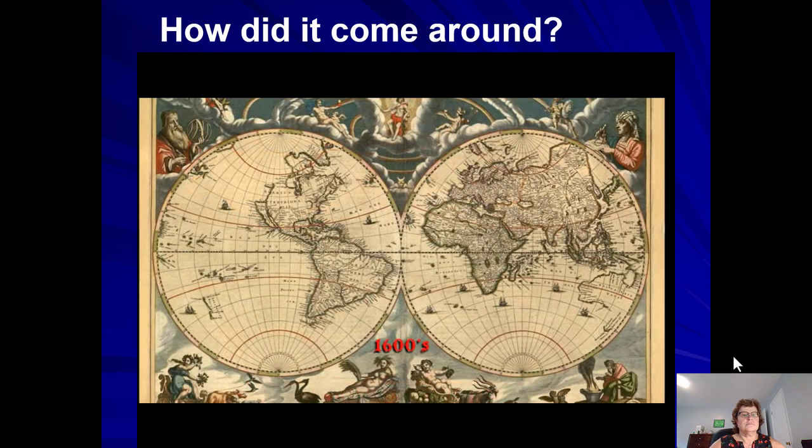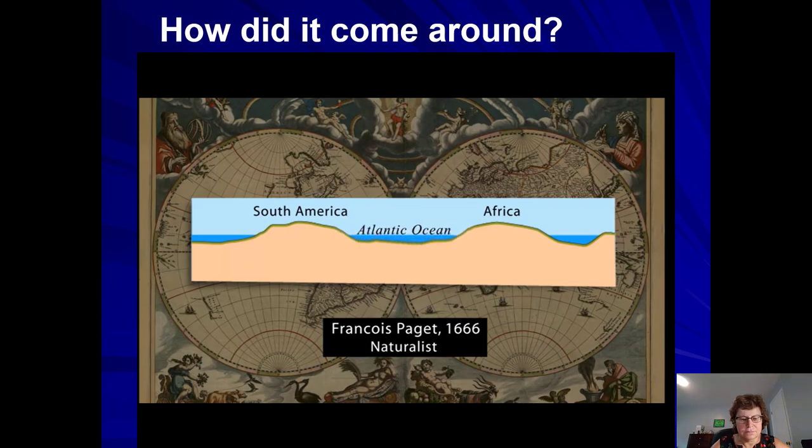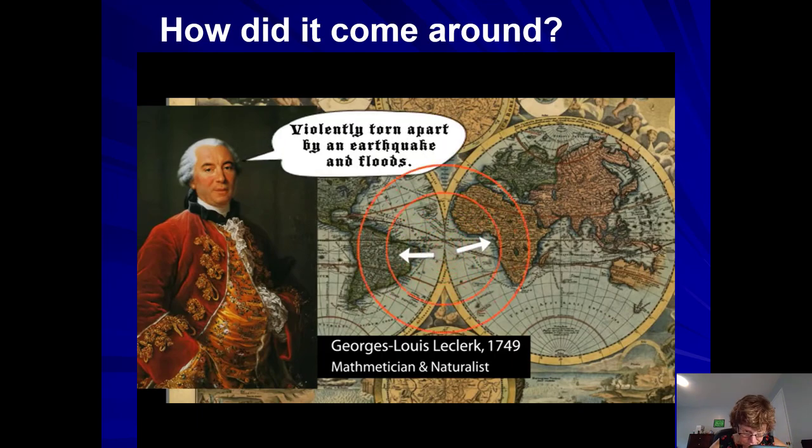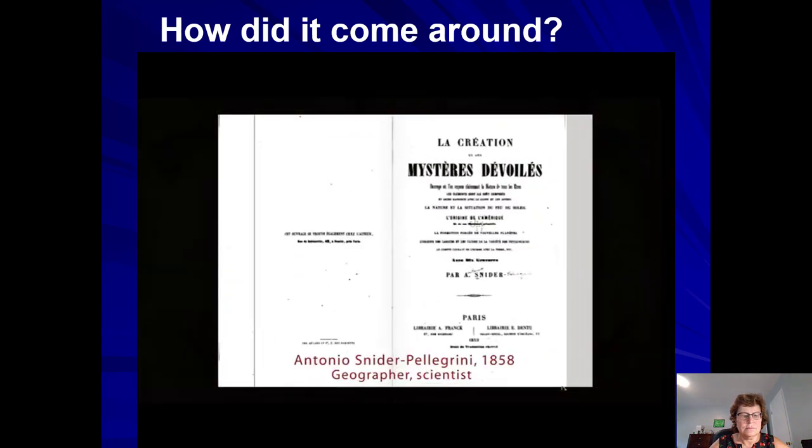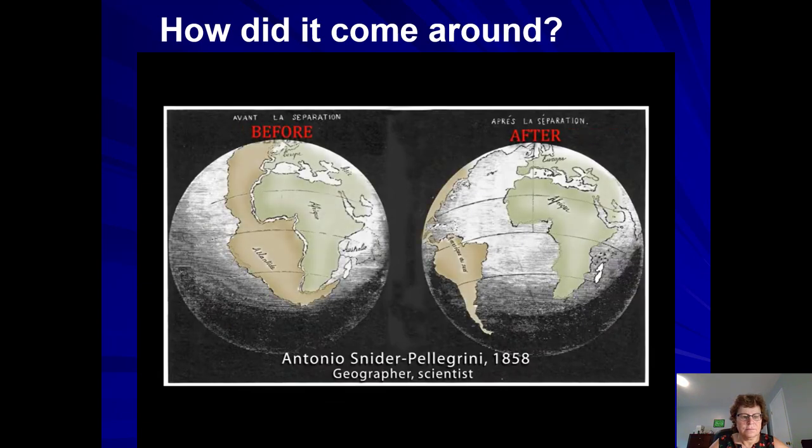Over the next three centuries, other proponents of an original single continent included François Placet, who invoked the sinking of the land between the continents to create the Atlantic Ocean; George Louis Leclerc, who resurrected Ortelius' theory of a great earthquake and floods pushing the land apart; and finally, Antonio Snider-Pellegrini, who proposed that the shape of the continents, supported by fossil evidence, argued for the origin of a single continent, which not only joined the continents across the Atlantic Ocean, but also included Australia.